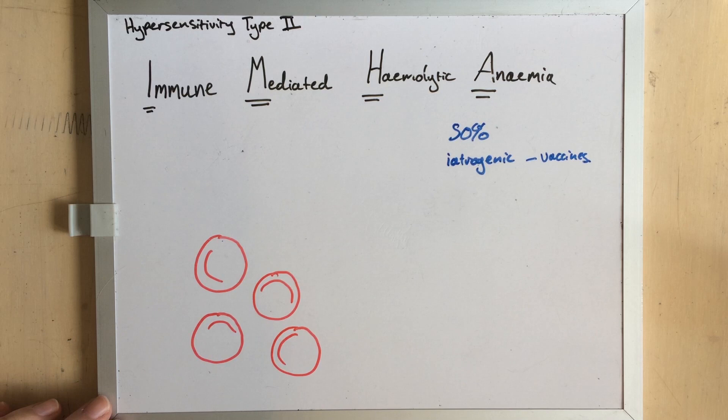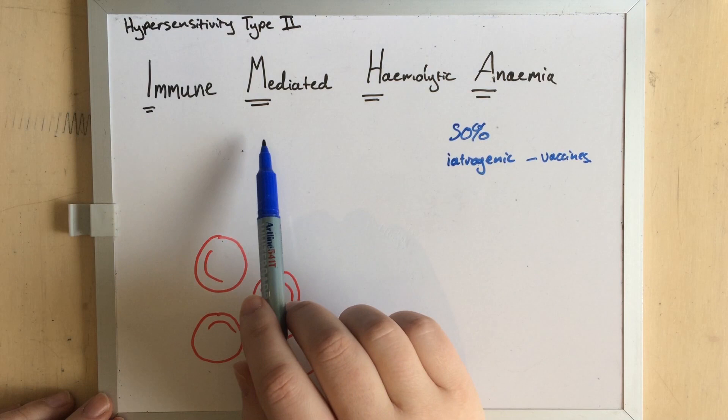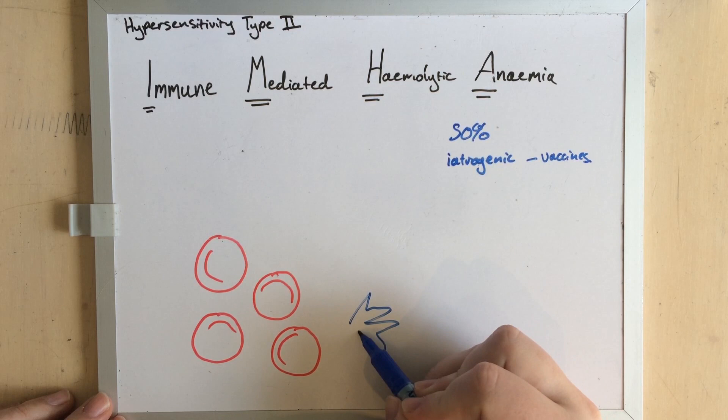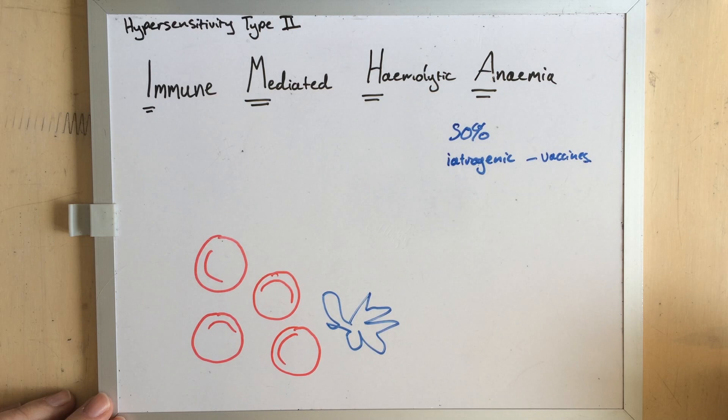So what am I actually talking about when I say immune-mediated hemolytic anemia? Basically immune-mediated means that the immune system is the cause of the problem, anemia means that there is not enough red blood cells, and hemolytic means that they all exploded. Obviously that should be a very bad thing.